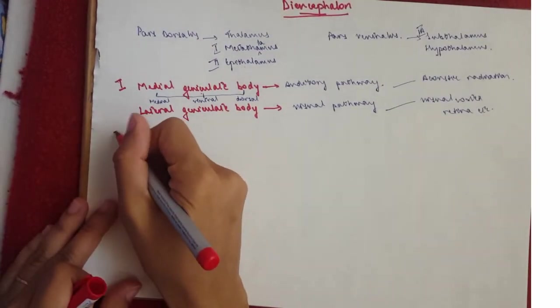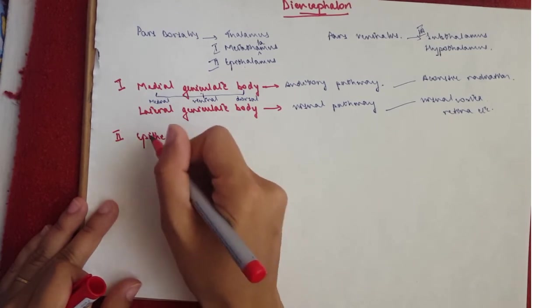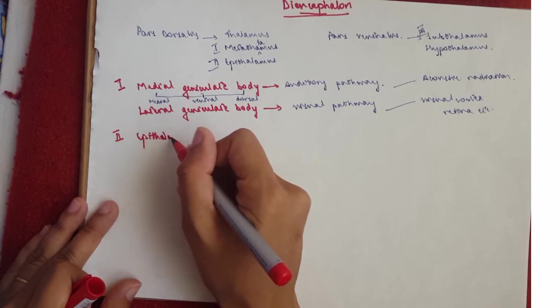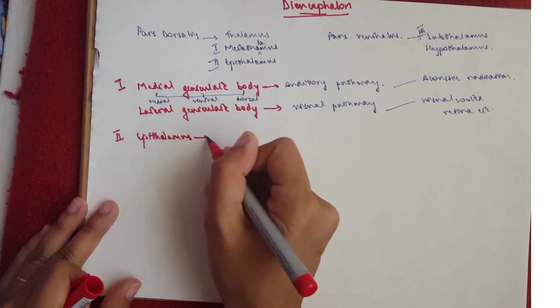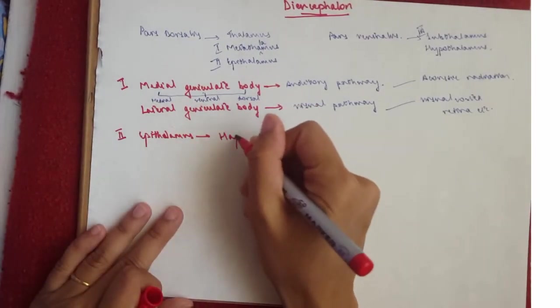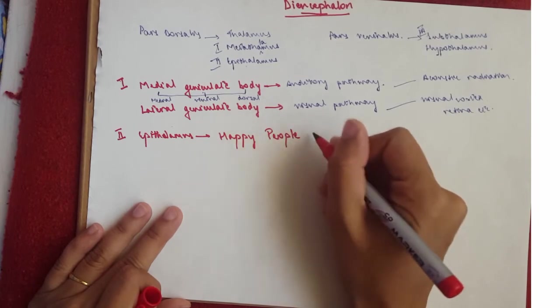And then we move on to the second one, which is the epithalamus. Now the epithalamus has a mnemonic, which is Happy People Prosper. So Happy People Prosper.